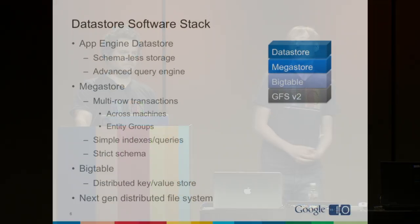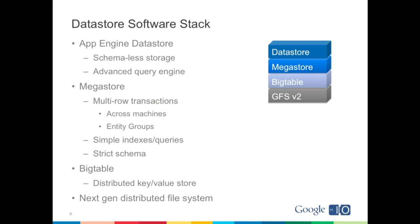Where Megastore differs from a standard SQL database is its unit of transactionality, which is centered around an entity group — Alfred will talk more about that later. Megastore stores its data in Bigtable, which many of you may have heard of. Bigtable is a large distributed key-value Datastore. You can store data in columns and access them via the row key only. It's a very important and widely used piece of the Datastore at Google. At the bottom, Bigtable stores its data in Google's next-generation distributed file system, the successor to GFS.